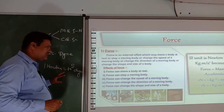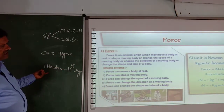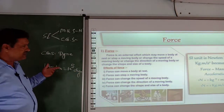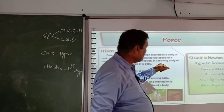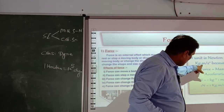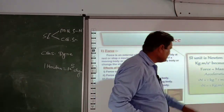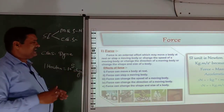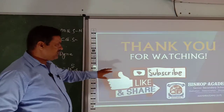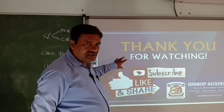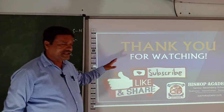So the dyne is the CGS unit of force, and Newton is the MKS unit of force. Newton is a single word representing kilogram meter per second squared. Now we move to the next point, which we will be discussing in the next video.